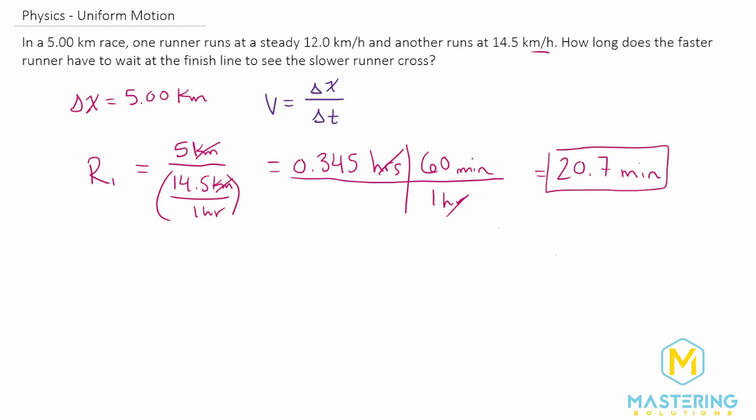And now let's do the second runner. So the slower runner ran the same 5 kilometers. He did it in 12 kilometers per hour.